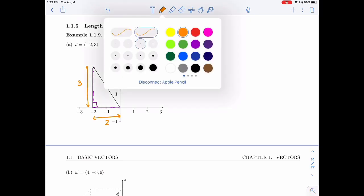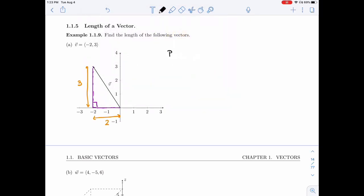And so if I use the Pythagorean theorem on that triangle, I'll have that the length of V squared is the length of one side squared plus the length of the other side squared, and so I get 13.